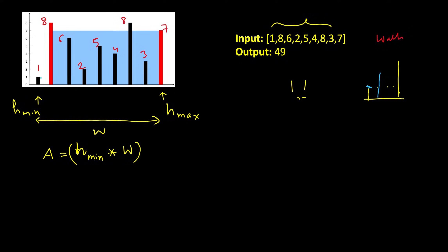The minimum wall can be on the left or right side. Whatever is the minimum, you move inward until you find a bar higher than that minimum. You move that pointer to the new position. H_max stays fixed — you only need to increase H_min. Then you compare the new height with H_max; whichever is smaller becomes the new H_min.